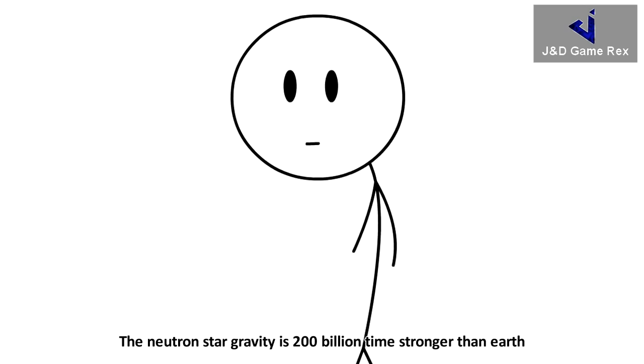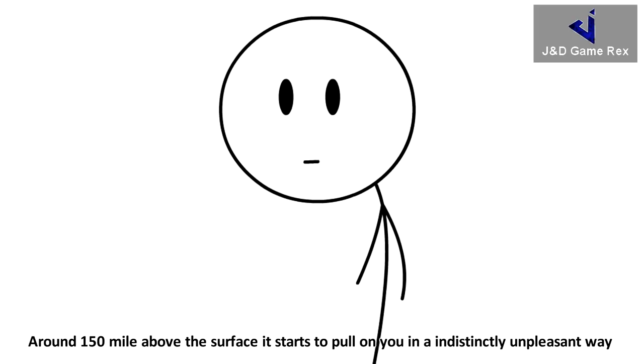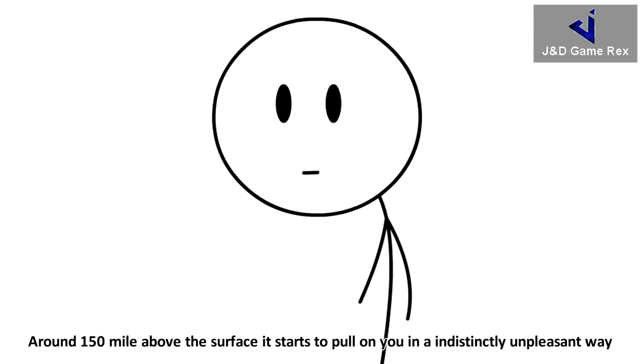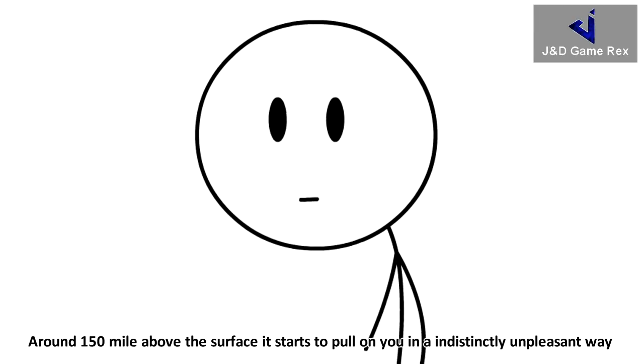The neutron star gravity is 200 billion times stronger than Earth. Around 150 miles above the surface, it starts to pull on you in a distinctly unpleasant way.